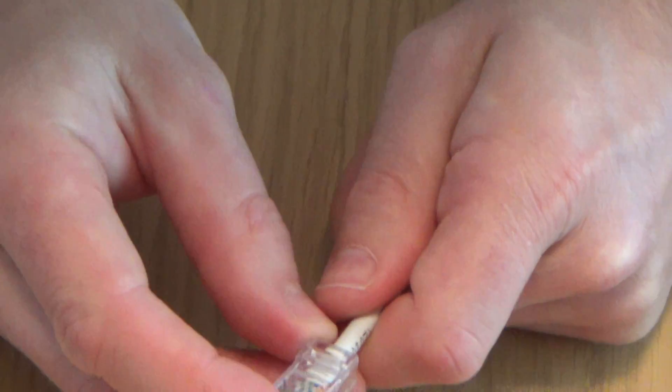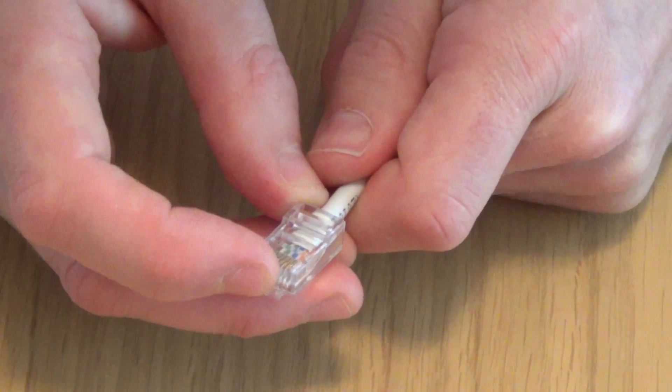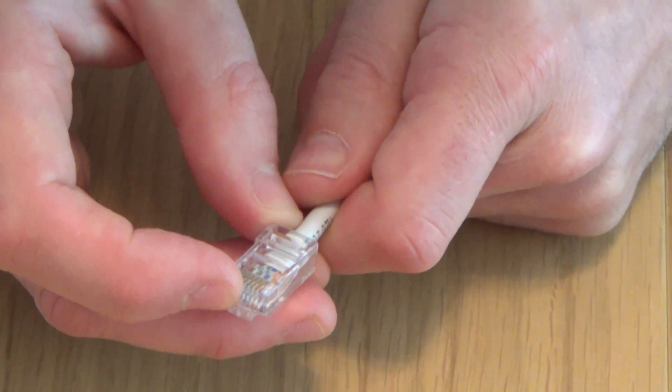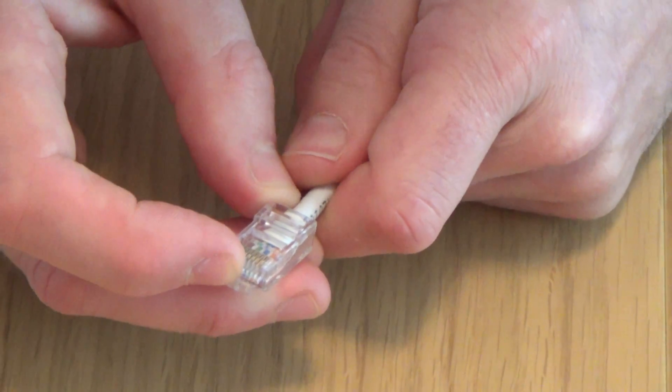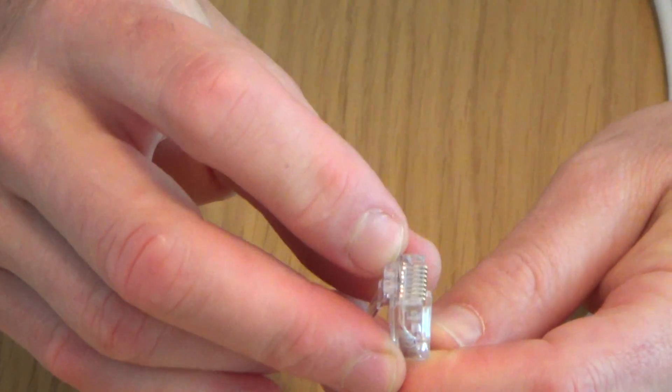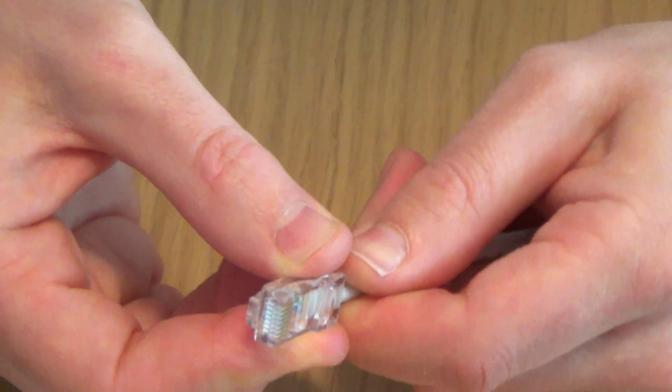Now let's just double check the colors. White orange, orange, white green, blue, white blue, green, white brown, and brown. Okay. And the cable's nicely along there. It's fully in. Again, I can see all the copper at the end. And they're pushed all the way along.